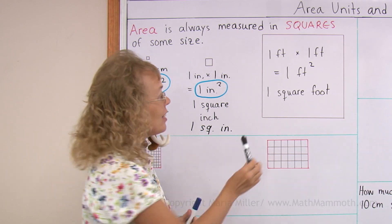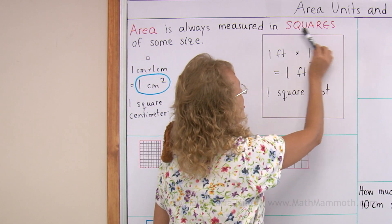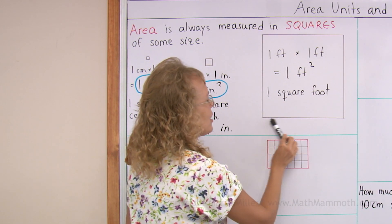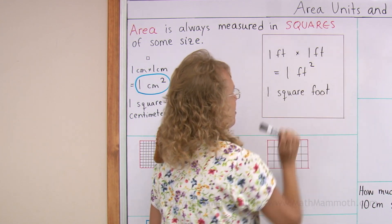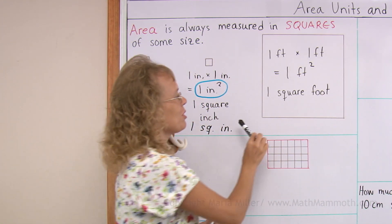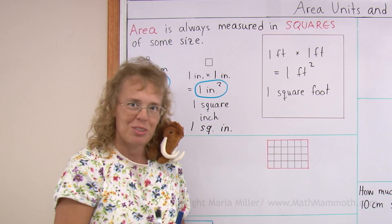And then lastly, this square here measures one square foot because this is one foot, this is one foot. So one foot times one foot and we get one square foot.